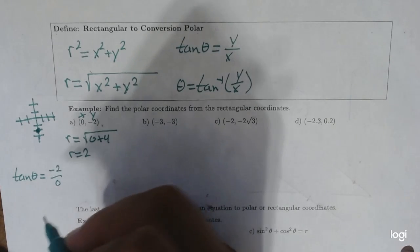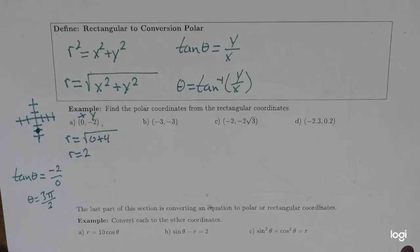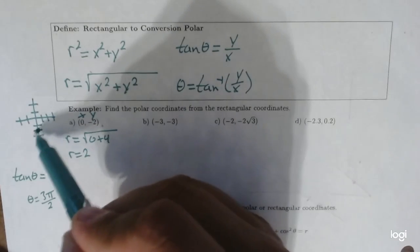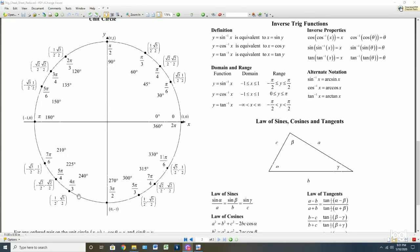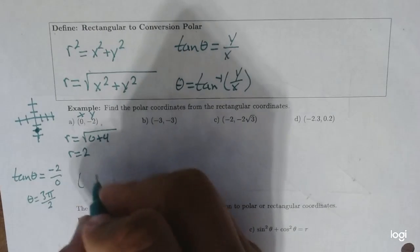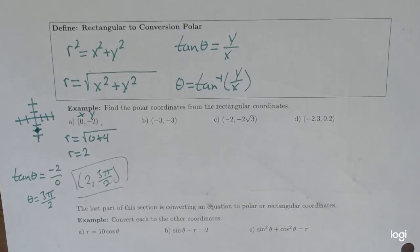So essentially, when is tangent undefined? It's at 3π/2. Now, if you're wondering, it's also undefined at π/2 — but remember, the point was down here on the negative y-axis. Since the point is down there, we want the angle on the bottom, so we don't choose π/2 because that would be up here. Since it's negative 2, it will be closer to 3π/2. So our point is (2, 3π/2) in polar coordinates.